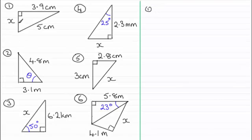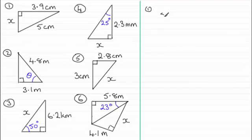Number one is a typical Pythagoras' Theorem question where we've got two sides of a right angle triangle and we need to work out the missing side. We're asked to find a shorter side, because the hypotenuse is the longest side — the side opposite the right angle. Using Pythagoras' Theorem: the hypotenuse squared equals the sum of the squares of the other two shorter sides.